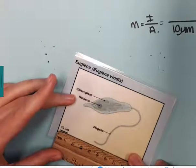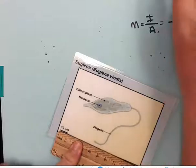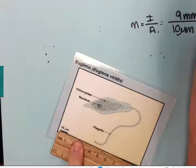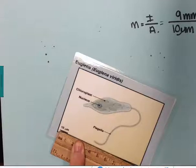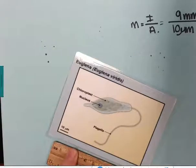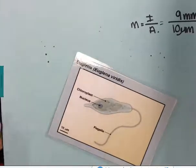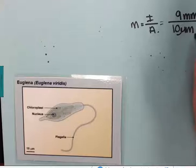In this case I get nine millimeters, so the image of the scale bar is equal to nine millimeters. The actual they're telling me is 10 micrometers, and now I need to calculate the magnification.